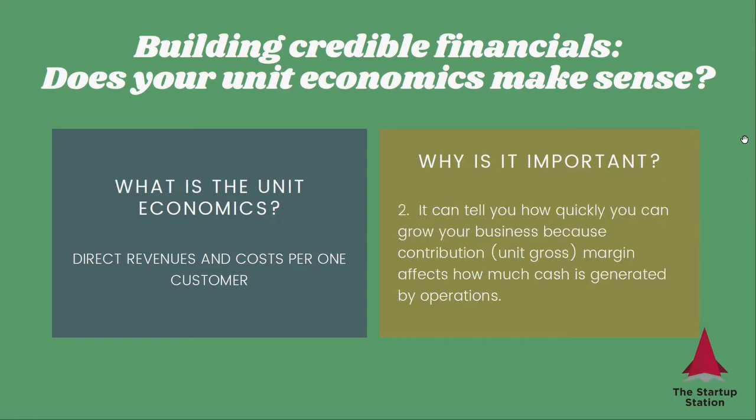Second point: it can tell you how quickly you can grow your business. How much money you make per customer, which is called the contribution margin, affects how much cash is generated by operations — so how much money you have to invest in your business. You're going to go for growth rounds and get external capital to fuel your growth. That is possible for some companies. For others, they may just need internally generated cash flow in order to scale. So it is important to understand how much help you can get from your operations directly.